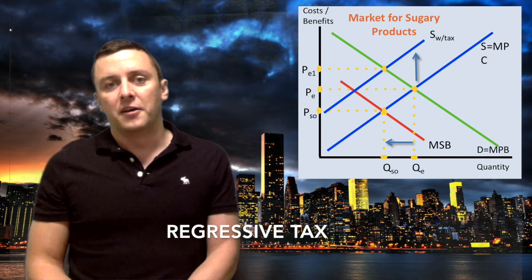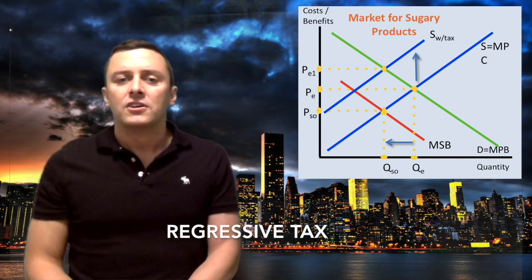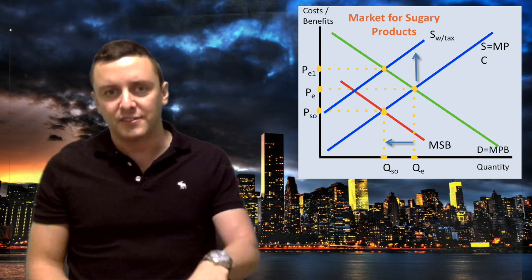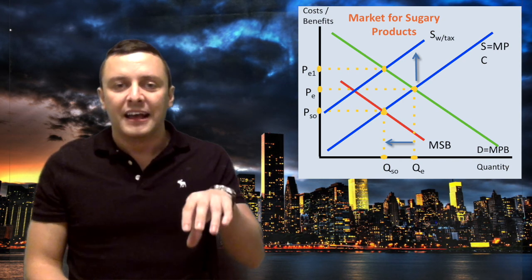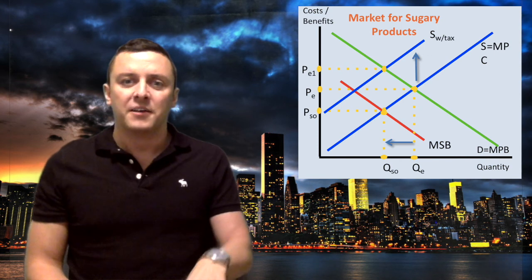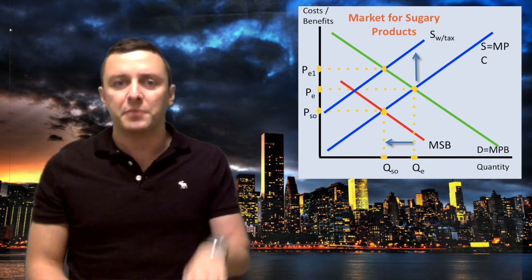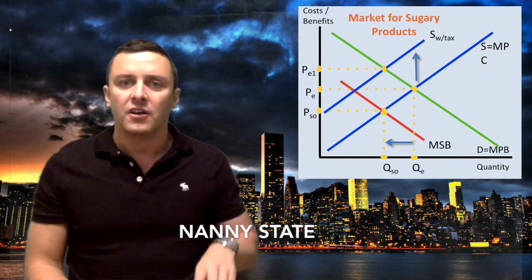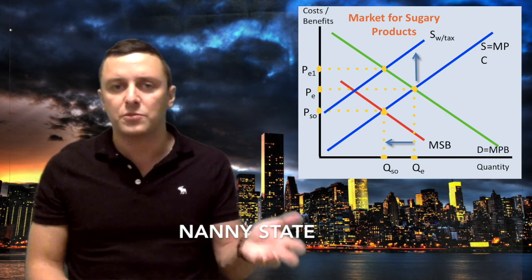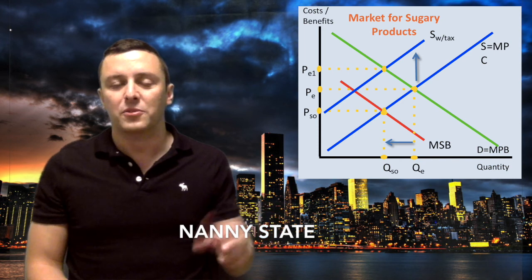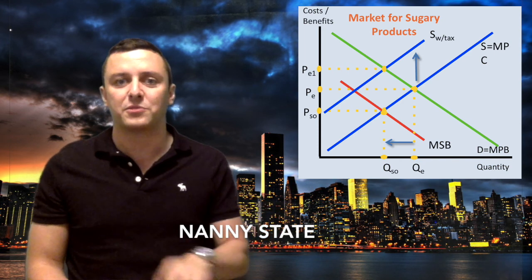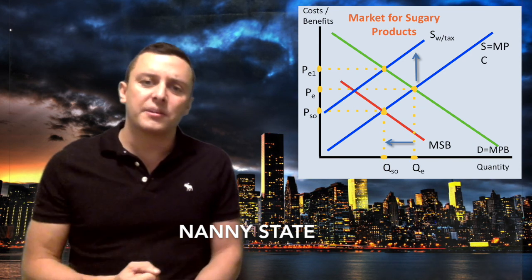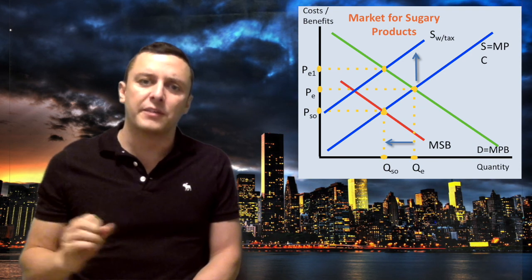Another argument against it is the nanny state argument. I'm not really sure whether you should include this - this is maybe a minor argument. But should the government be legislating and telling people how to spend their money? If people want to spend it on sugar or unhealthy goods, maybe they should be allowed to. Should the government be taxing people to stop them consuming it? And the last argument, I would say a very powerful argument, is elasticity.